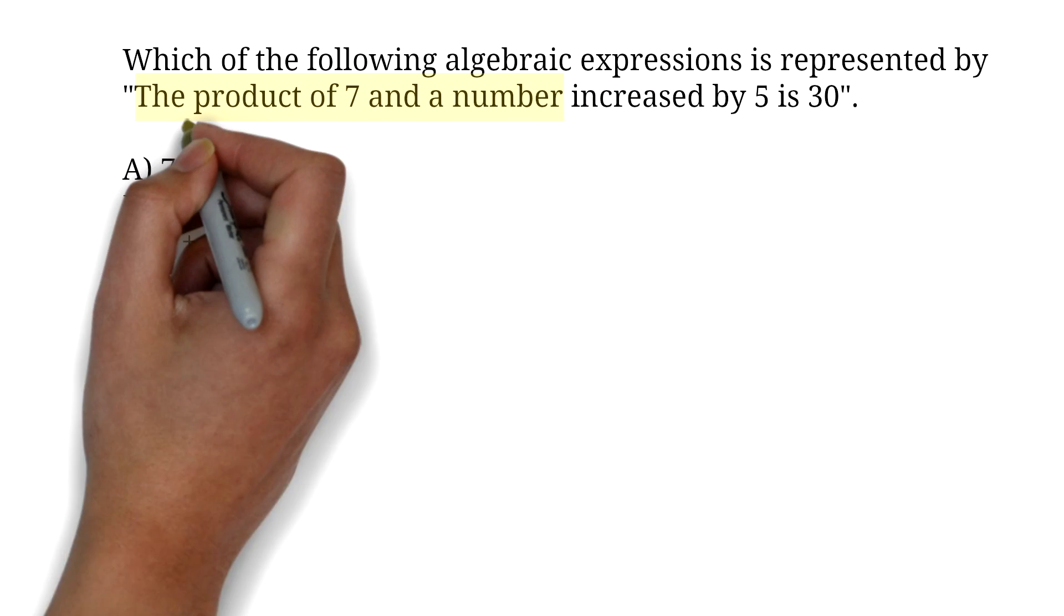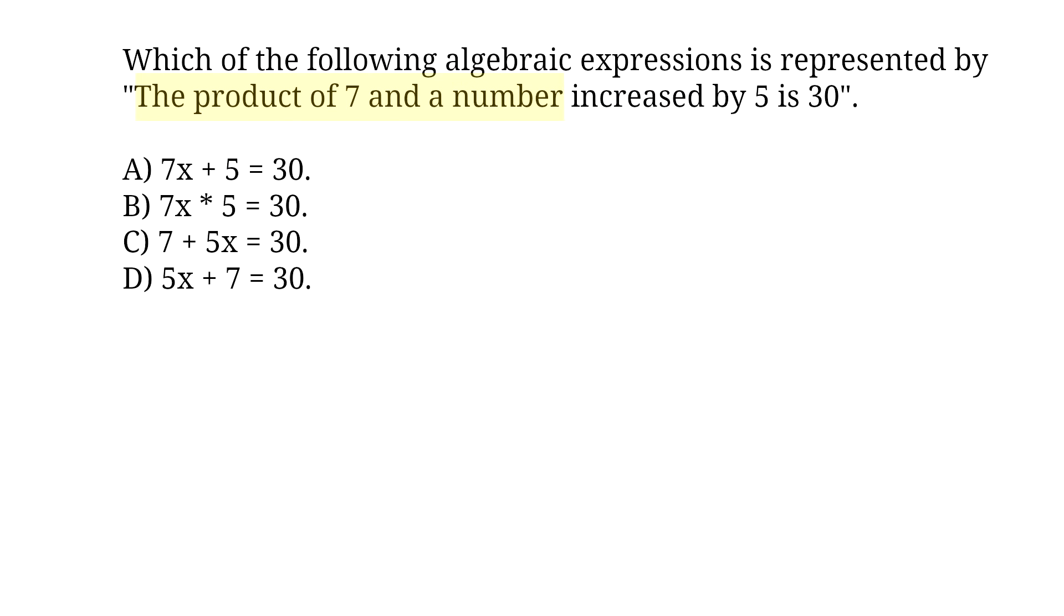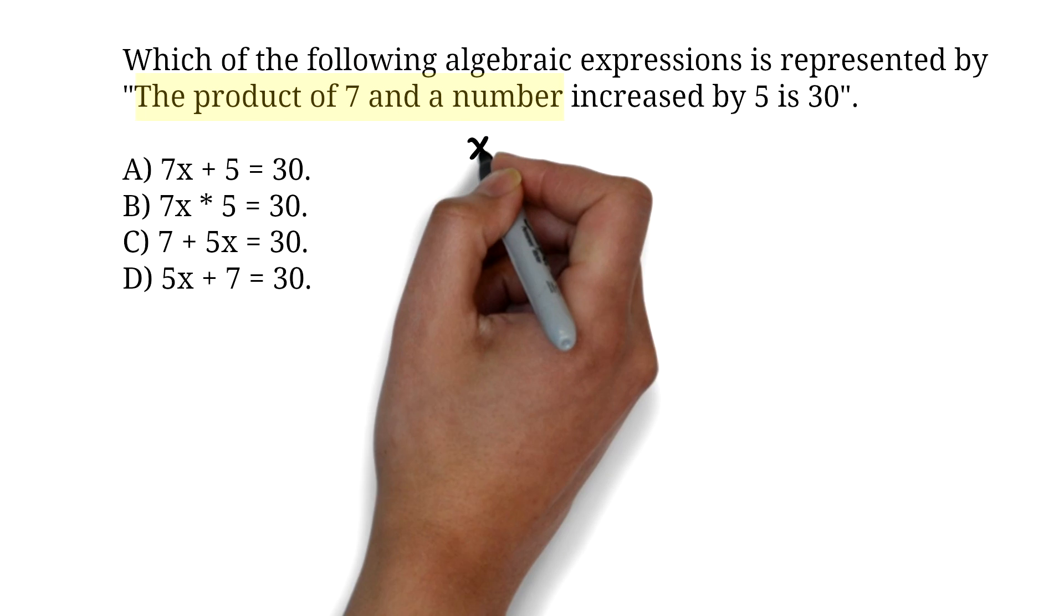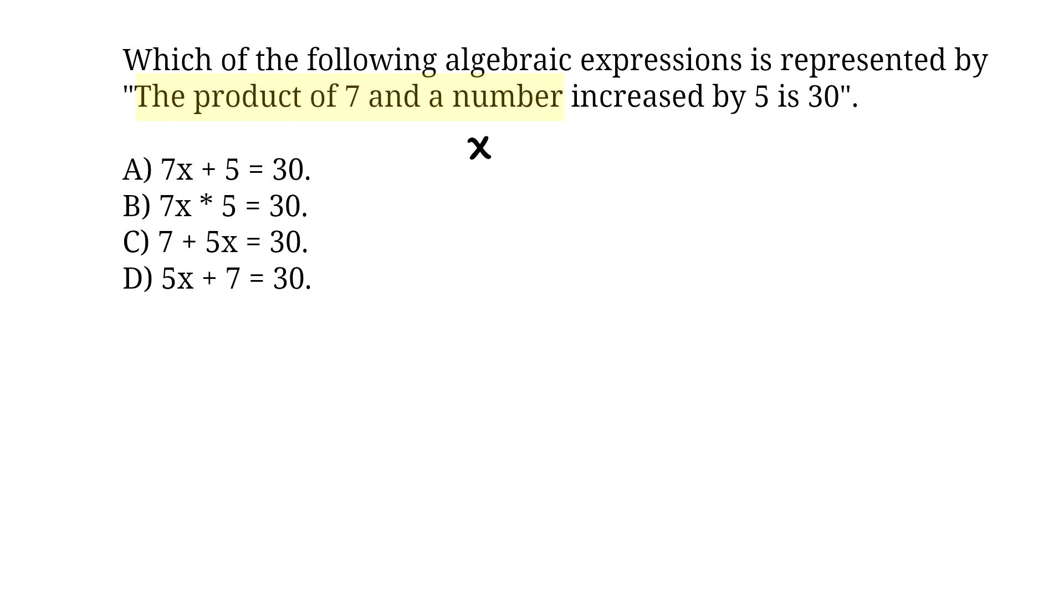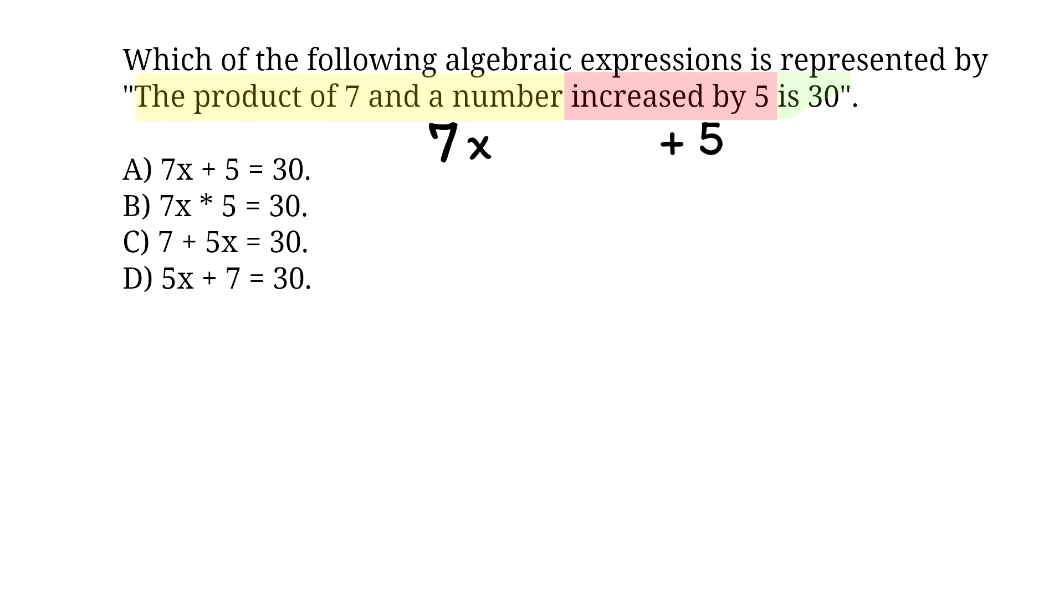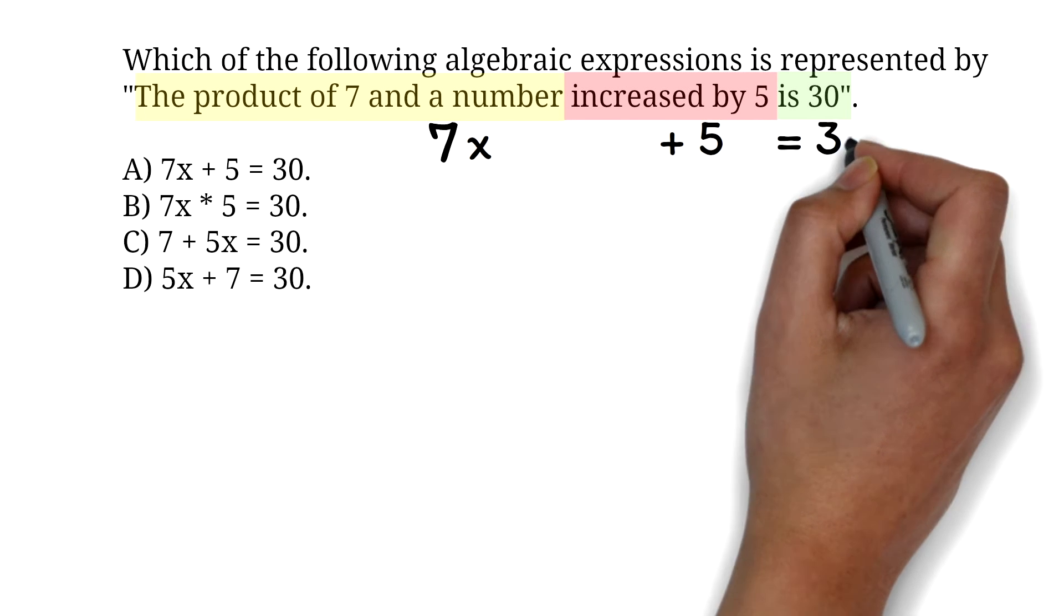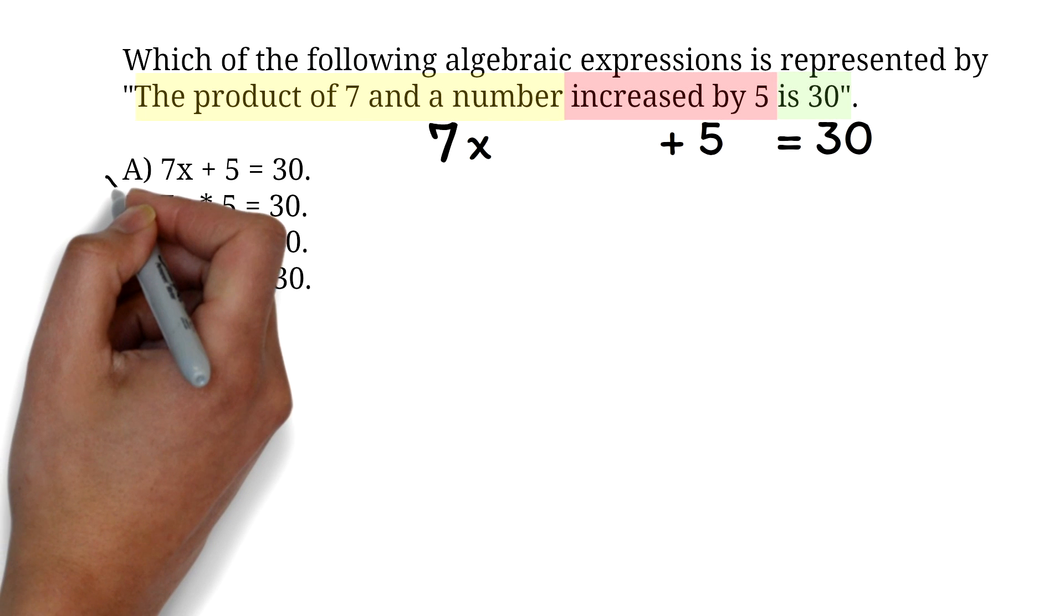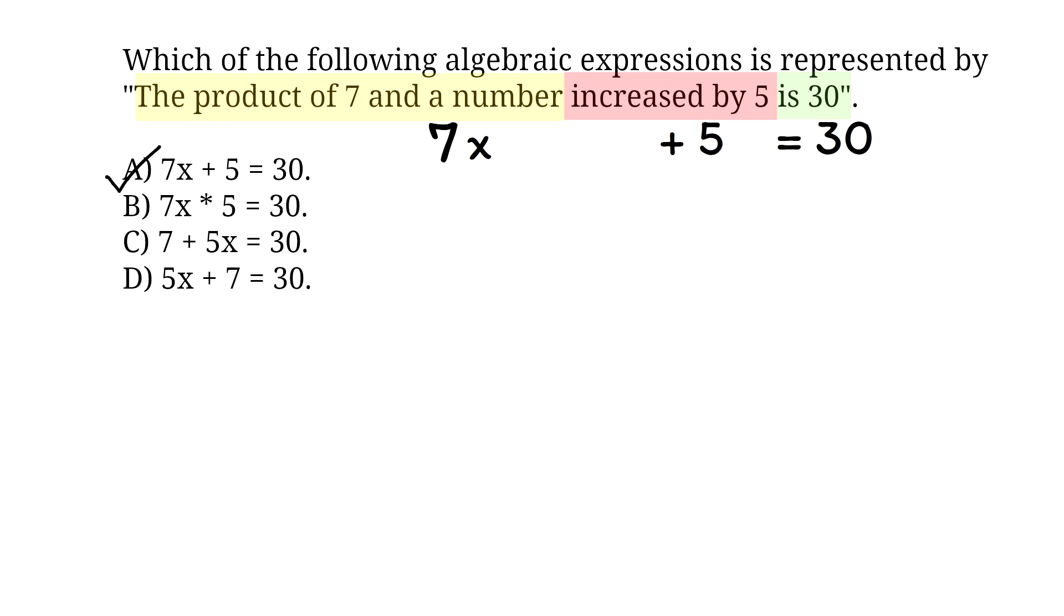Let's translate it. The product of 7 and a number. Here, product implies multiplication. If we let a number be represented by a variable, say x, this part of the phrase translates to 7 times x or just 7x. Increased by 5. Increased by implies addition. So we add 5 to it. Is 30. Is in mathematical expressions typically implies equality. So, is 30 means equals 30. Therefore, the correct answer is A, 7x + 5 = 30. We have a complete free lesson on translations of expression. Please check it out for more.